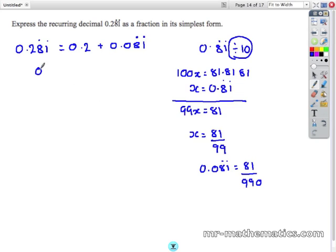Now we need to add that to the 0.2, which is two tenths. So use equivalent fractions. Multiply numerator and denominator by 99, and we have 198 over 990.